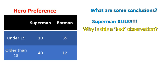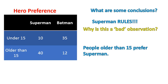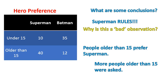More people who were older than 15 preferred Superman, and more people older than 15 were asked. There are 52 people asked who were older than 15, and only 45 who were under 15. If you were looking at it critically, you'd ask why 15 is the cutoff line and what all the data says. A better conclusion: of the people who preferred Superman, there were four times as many older than 15 as under 15. That's a conclusion based on the data we have.